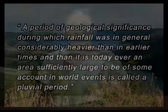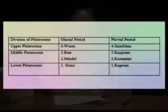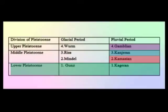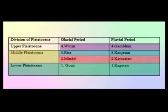Four fluvial periods were traced on the basis of geological evidences in East and South Africa: number 1, Kageran; number 2, Kamasian; number 3, Kanjiran; and number 4, Gamblian. These fluvials were contemporaneous to the glacial stages. Thus, Kageran occurred at the time of Günz during the Lower Pleistocene, while Kanjiran and Kamasian occurred at the time of Mindel and Riss during the Middle Pleistocene, and the Gamblian corresponded to Würm during the Upper Pleistocene.